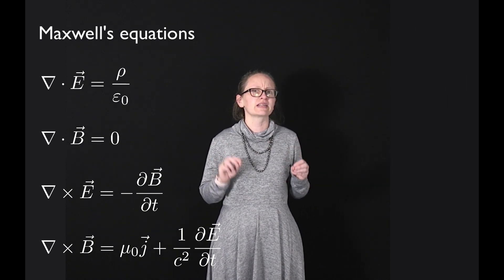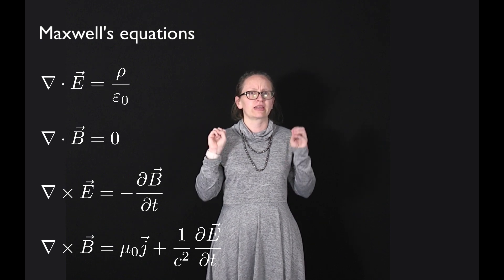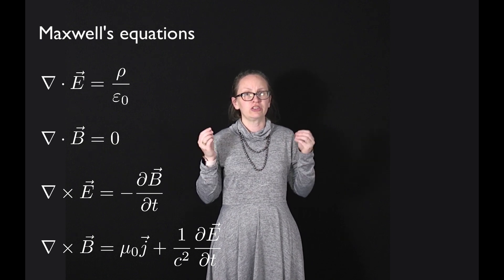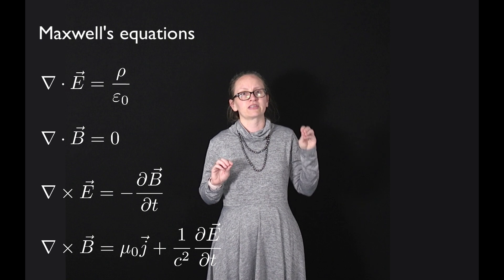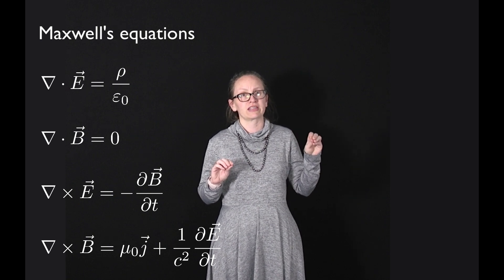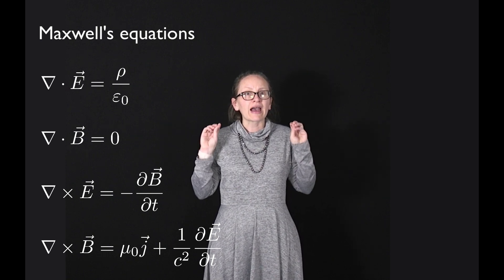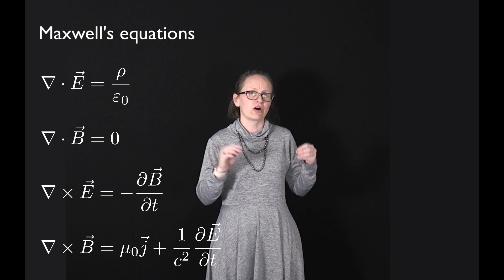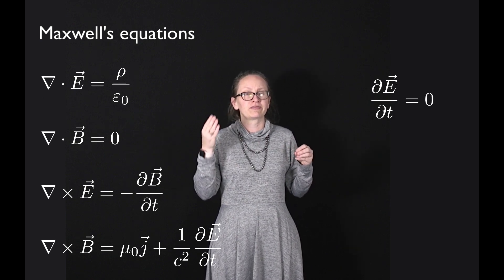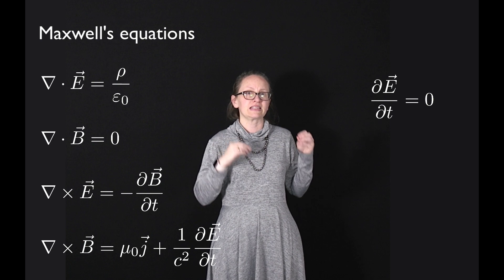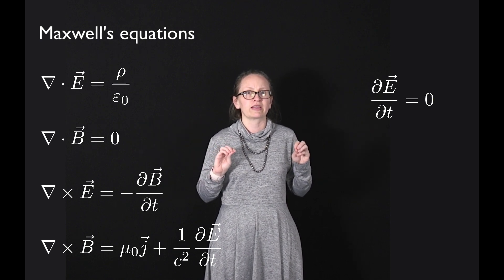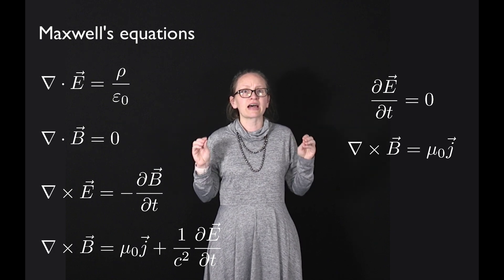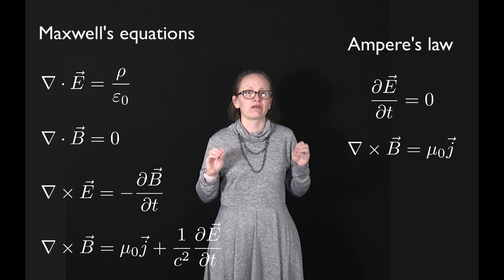We haven't quite considered Maxwell's fourth equation in its entirety. Maxwell's fourth equation is the curl of B equals mu naught J, where J is the current density, plus one over c squared times the partial derivative of E with respect to t. However, we have considered the case where the electric field is not varying with time, so that partial derivative is zero, and we can write it simply as the curl of B equals mu naught times J.